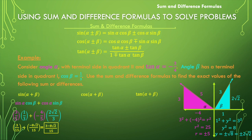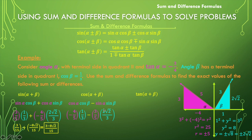For cosine of alpha plus beta, using cosine of alpha times cosine of beta minus sine of alpha times sine of beta, we put the same values in their correct spots. Multiplying gives negative four over 15 minus six root two over 15, which simplifies to negative four minus six root two, all over 15.